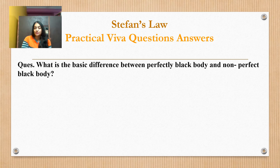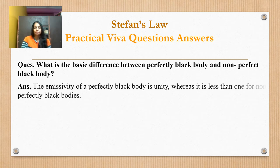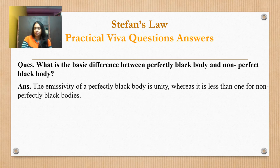What is the basic difference between a perfectly black body and a non-perfectly black body? The emissivity of a perfectly black body is unity (one), whereas for a non-perfectly black body it is less than one.